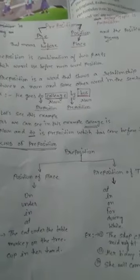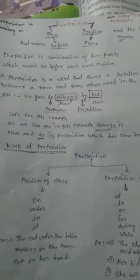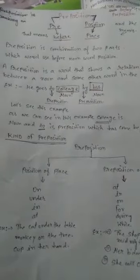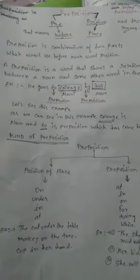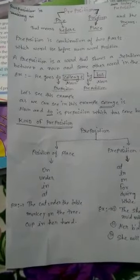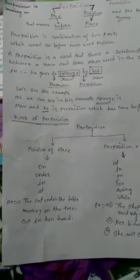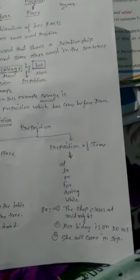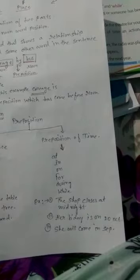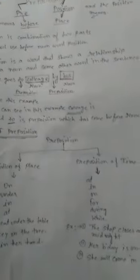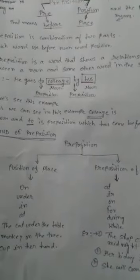There are different kinds of prepositions. The main kinds are: preposition of place and preposition of time. Preposition of place examples: 'on,' 'under,' 'in,' 'at.' For example — cat under the table, monkey on the tree, cup in her hand. Preposition of time examples: the shop closes at midnight, her birthday is on 20 October.